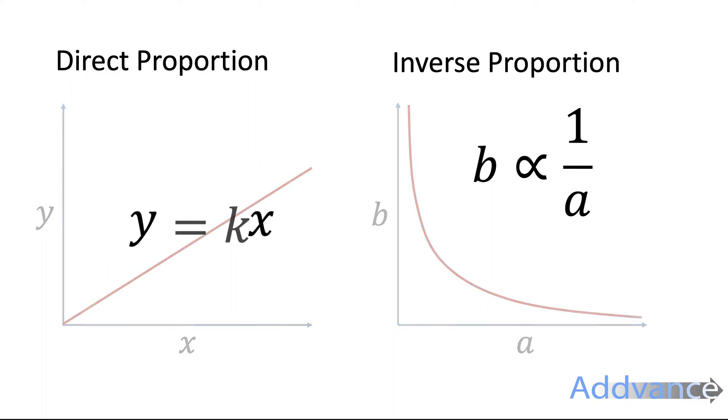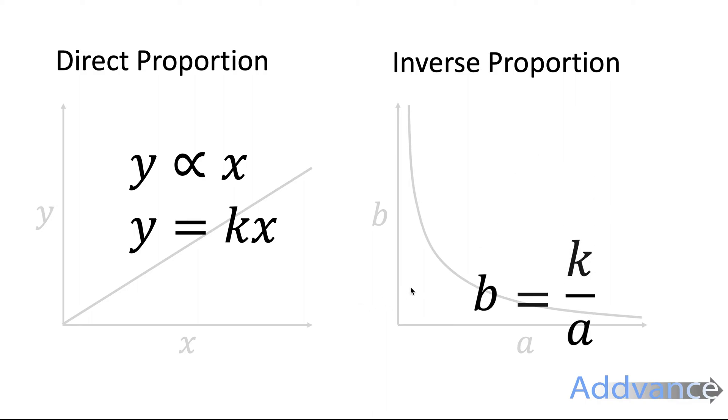Now another way of writing this is just that y is equal to something times x and we normally call that something k. And for inverse proportion, b is equal to something divided by a. And again, we just write that something as k.